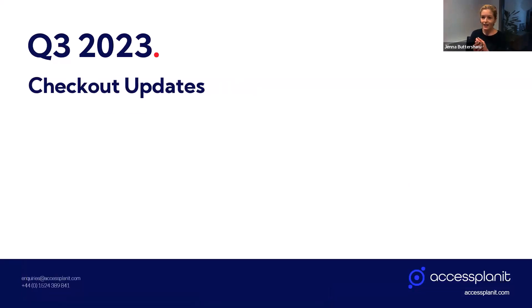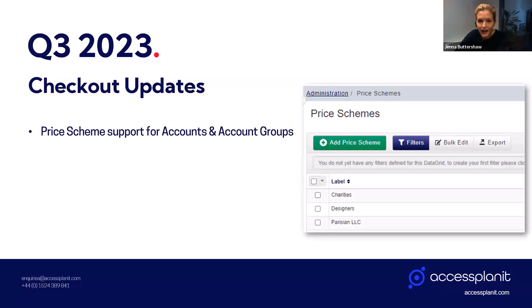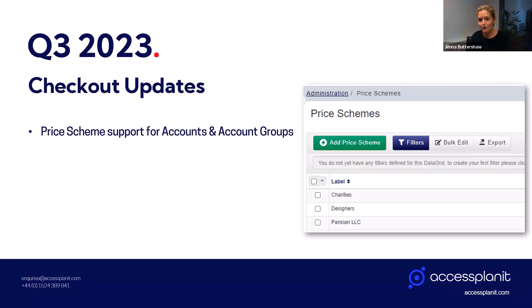Moving on to the features that are coming very soon. It looks as though we're only a couple of weeks away from our latest update being released. We have two checkout updates. The first one is support for account and account group-based price schemes. Job role-based price schemes will be coming later. So if the only feature you're waiting for to make the switch over to the new checkout basket is account and account group price schemes, following this next release you should be good to start making that switch.